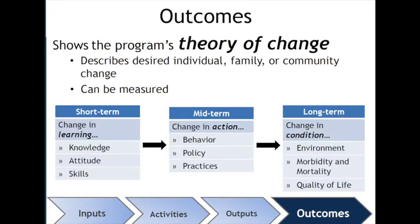The last item of the logic model is the outcomes, which shows the program's theory of change. It describes the desired individual, family, or community change, and can be measured in terms of time — short-term, mid-term, and long-term. In the short-term, you can measure the change in learning: the knowledge, attitude, and skills gained from the community. The mid-term outcome could be the change in action — behavior change, policy, or practice changes. The long-term outcome is the change in conditions: a different environment, long-term mortality and stability rates, and quality of life.